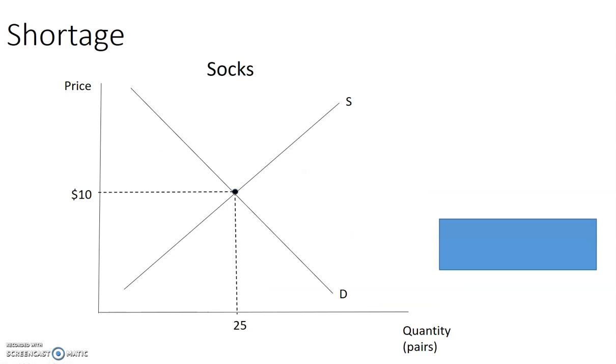In this case here, we have the sock market. And for the sock market, you can see that the equilibrium price is $10 and the equilibrium quantity is 25.